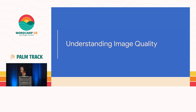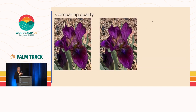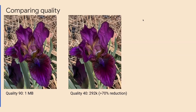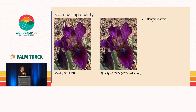I want to take a side tour and talk about image quality, because when we get into newer image formats it's hard to compare just image size — we need to think about what the quality is, how good does that image look when compressed. If you look at these two images, the one on the left is quality 90 at one megabyte, and the one on the right is 70% smaller. You can't really tell the difference. My point is: context matters. The quality you need depends on where the image will be seen and at what size. A tiny thumbnail can have some pixelation, but a full-screen photo on a photographer's site needs really high quality.